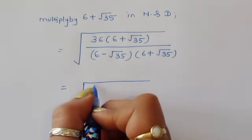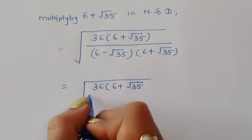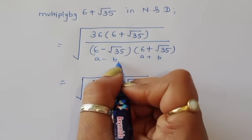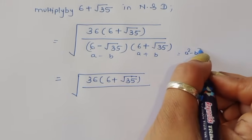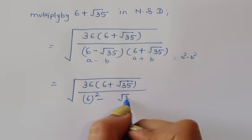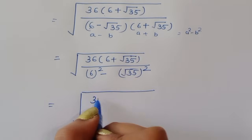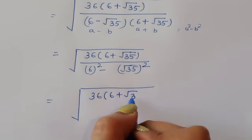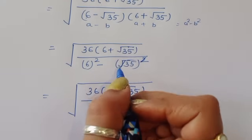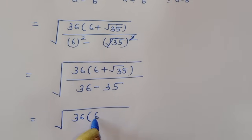We have square root of 36 times (6 plus square root of 35) in the numerator. In the denominator, this is of the form (a minus b)(a plus b), which equals a squared minus b squared. So a squared is 6 squared, which is 36, minus b squared, where b is square root of 35, so b squared is 35. That gives us 36 times (6 plus square root of 35) divided by 36 minus 35.